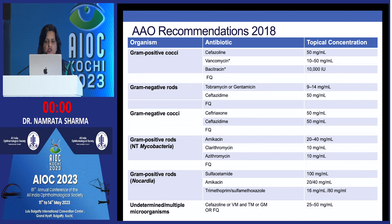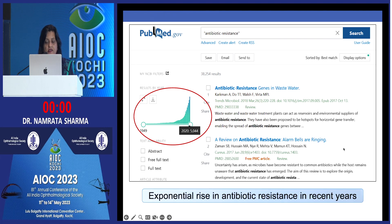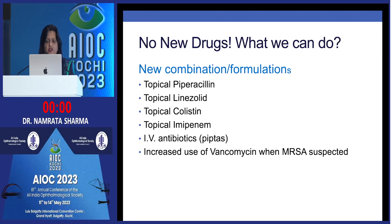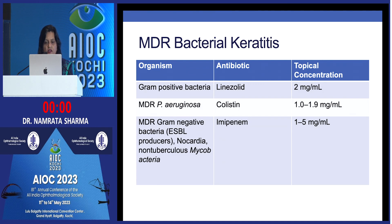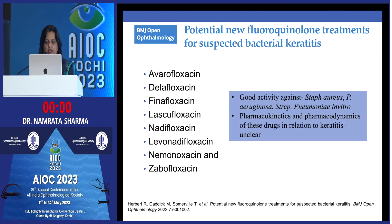Antibiotic resistance is a growing reality — searching PubMed shows an exponential rise in recent years. Fluoroquinolone resistance is well-documented. To address this, we can use new combination formulations: topical linezolid, colistin, imipenem, piperacillin-tazobactam, and increased use of vancomycin when MRSA is suspected. There is a single case report of topical colistin successfully treating bacterial keratitis. Newer fluoroquinolones are available but none are yet commercially ready.